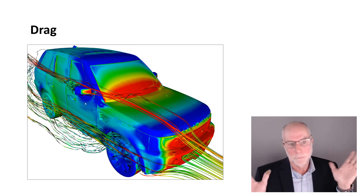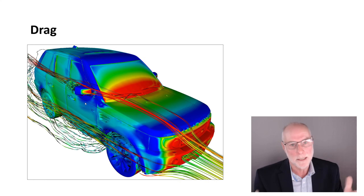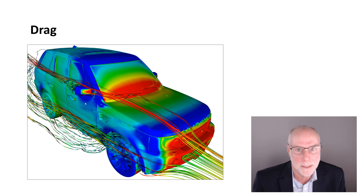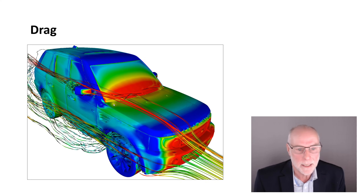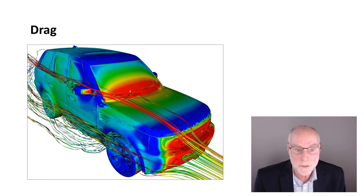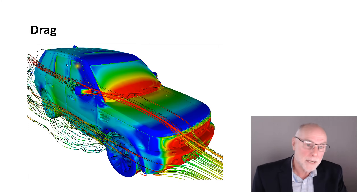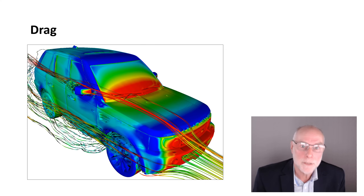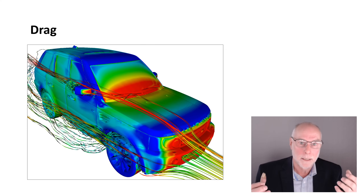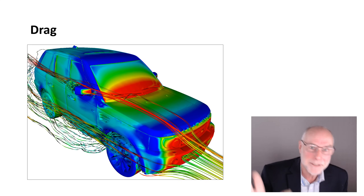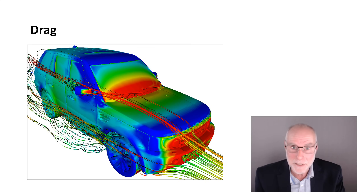Aerodynamic drag is the aerodynamic force resisting forward motion of the car, trying to pull it backwards. As we can see in this Land Rover computational fluid dynamics image, there are the red hot colours — the high pressures — trying to push the car backwards. But at the back of the car, there are low pressures pulling back on the car. So we have high pressures on the front pushing on the car, and low pressures at the back pulling on the car. The result is drag.